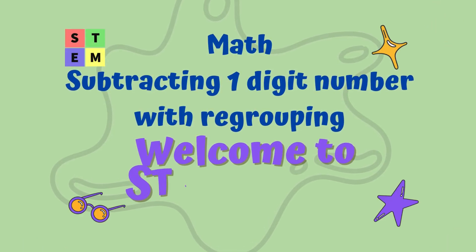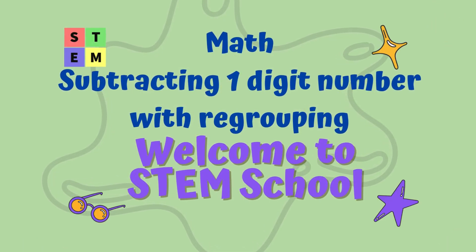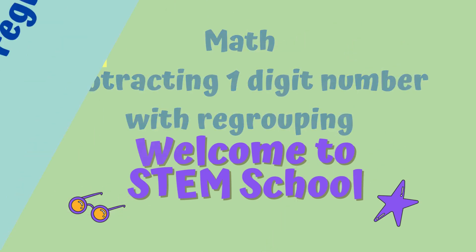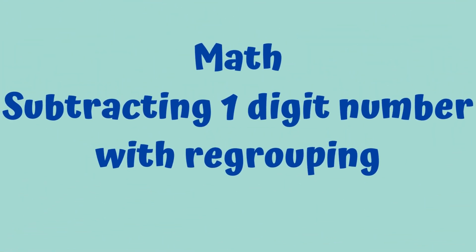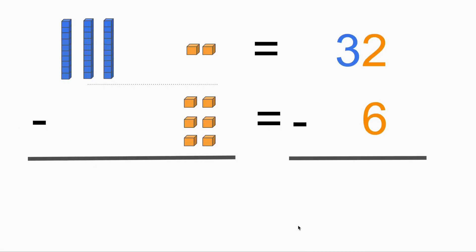Hello, welcome back to STEM School. Today we are going to talk about subtracting a one-digit number with regrouping. Now let's take a look at what we have here. We're going to calculate 32 minus 6.